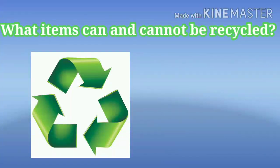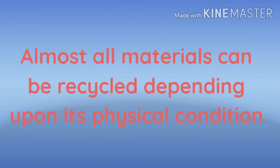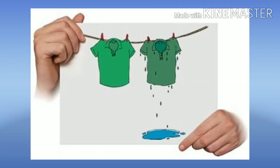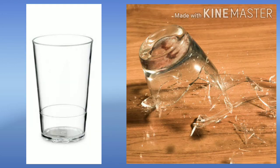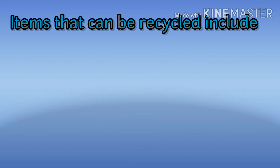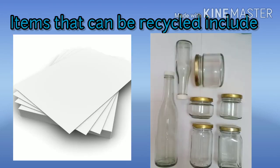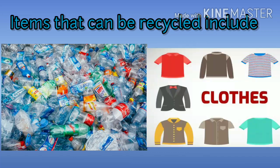What items can and cannot be recycled? Almost all materials can be recycled depending upon its physical condition — wet or dry, whole or broken, cut to pieces, fragile or durable, among others. Items that can be recycled include paper, glass bottles, jars, plastics, and clothes.